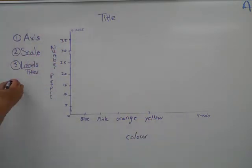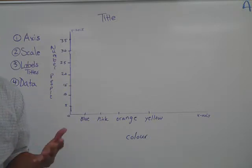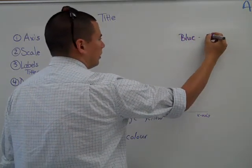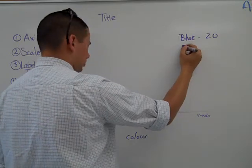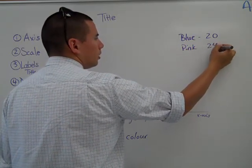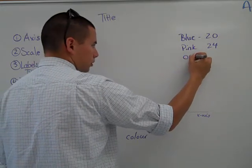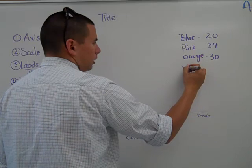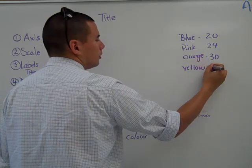The next thing that you need to have is of course your data. This data is generally kept from a tally chart or from a survey that you've done before. Students will then look at their data and see that maybe blue had 20, pink had 24, orange had 30, and yellow only had 5.